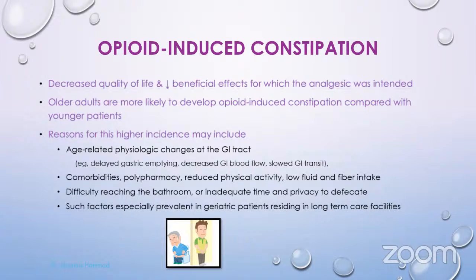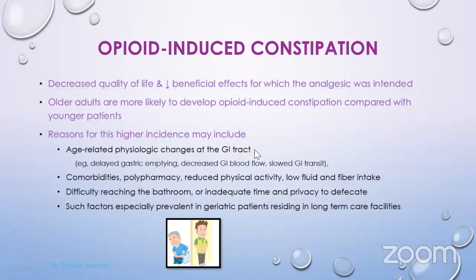Opioid-induced constipation decreases quality of life and the beneficial effect of the opioid itself. Older adults are more likely to develop it compared with younger patients due to age-related physiological changes — delayed gastric emptying, decreased GI blood flow, and slowed GI transit — plus comorbidities, polypharmacy, reduced physical activity, low fluid and fiber intake, and difficulty reaching the bathroom. Such factors are especially prevalent in geriatric patients residing in long-term care facilities.